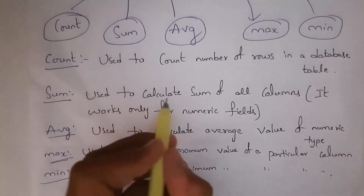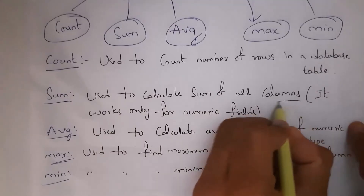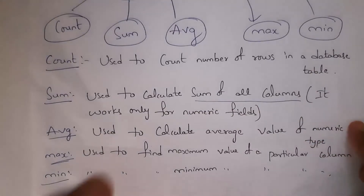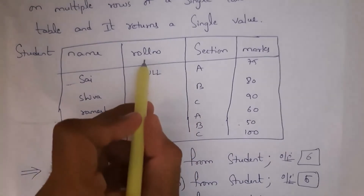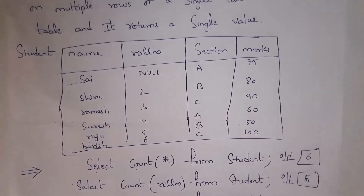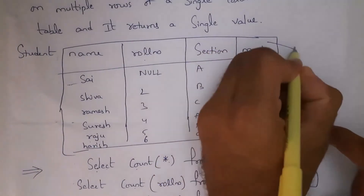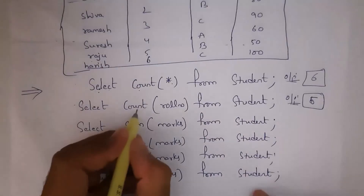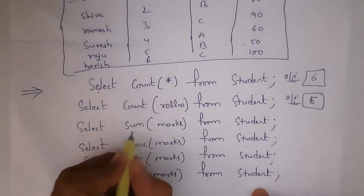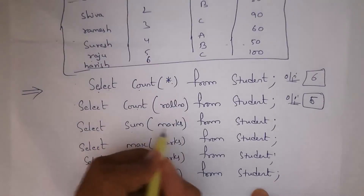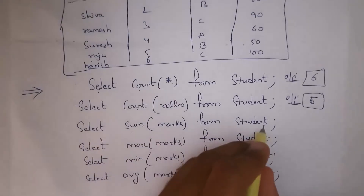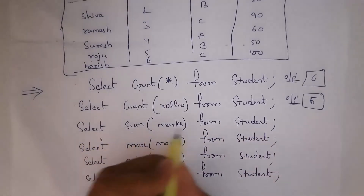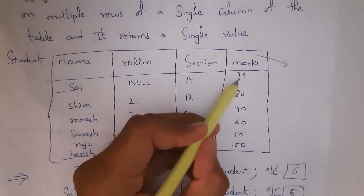SUM function is used to calculate the sum of a column, and we can apply SUM only to numeric columns. There are two numeric columns in this table: roll number and marks. So I can apply SUM to those columns. For example, I will apply SUM to the marks column: SELECT SUM(marks) FROM student.